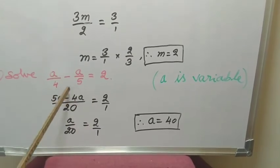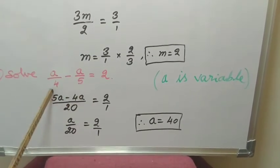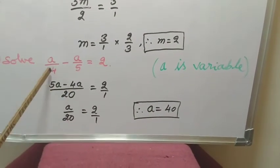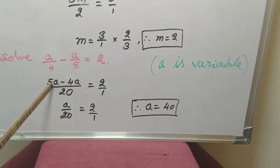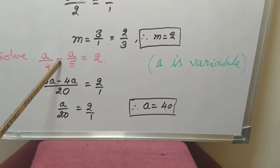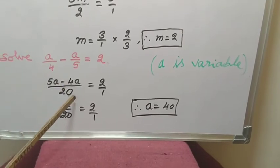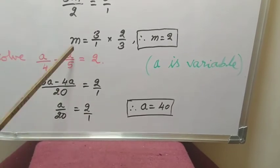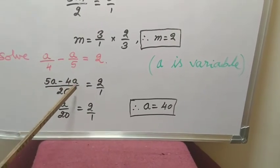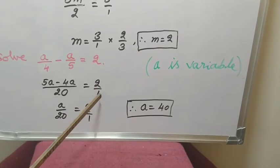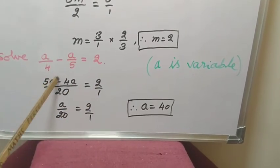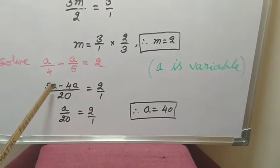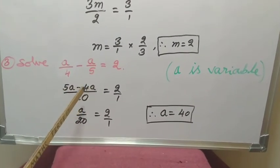Again, for the same type, take the LCM of denominators 4 and 5. That is 20. Divide this 20 by 4, quotient is 5, 5 into A, 5A. Minus is there, so put minus here. Divide this 20 by 5, 20 divided by 5 means 4, 4 into A, 4A. Equal to 2 can be done as 2 divided by 1. The difference of these two. These two are like terms with unlike signs. This is plus 5A and this is minus 4A.